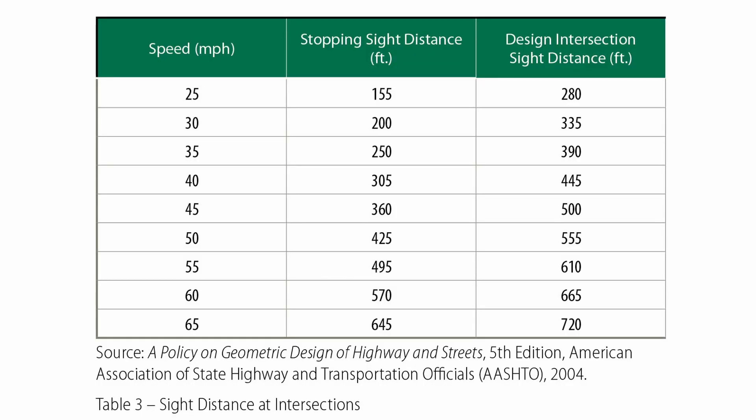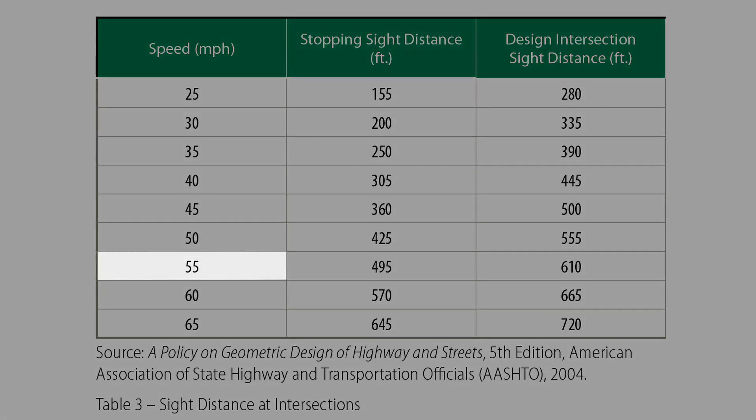To find the required intersection sight distance, use Table 3 from the FHWA Intersection Safety Manual. For example, at 55 miles per hour, the intersection sight distance would be 610 feet.